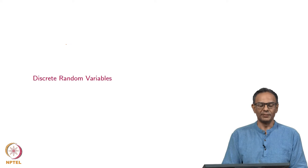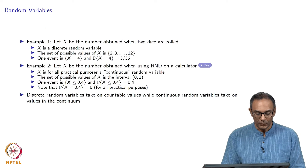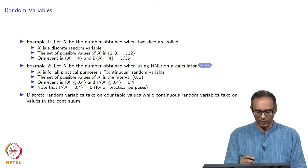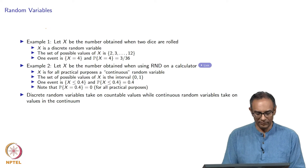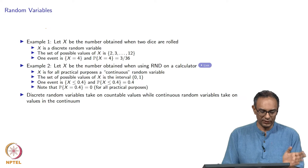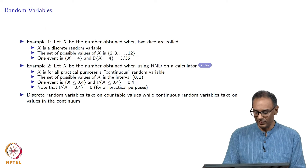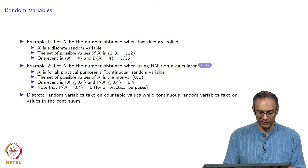The next topic is about random variables. We start with the general notion of what a random variable is, and then we will go specifically into a random variable called discrete and then a random variable called continuous.